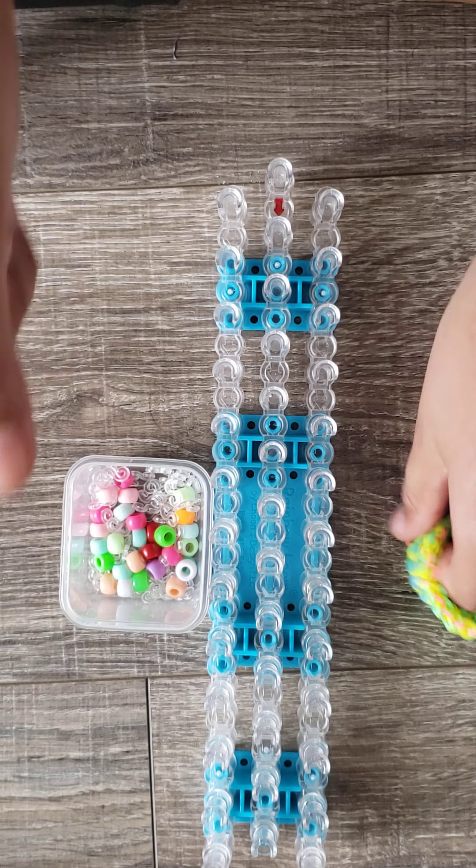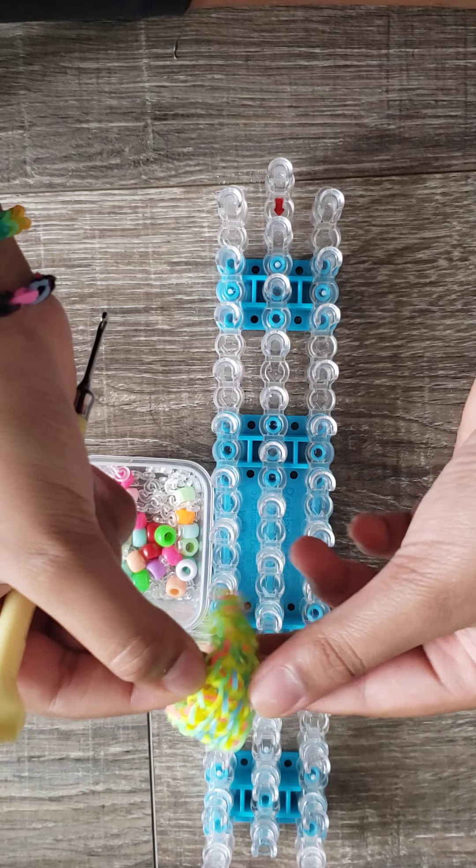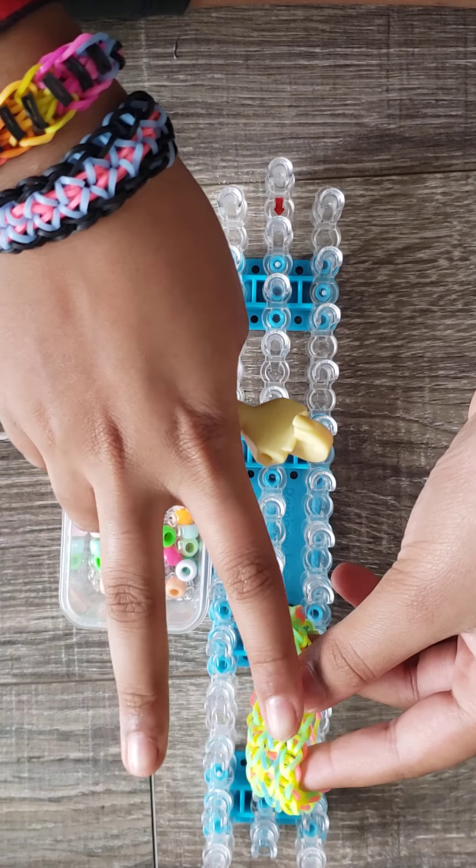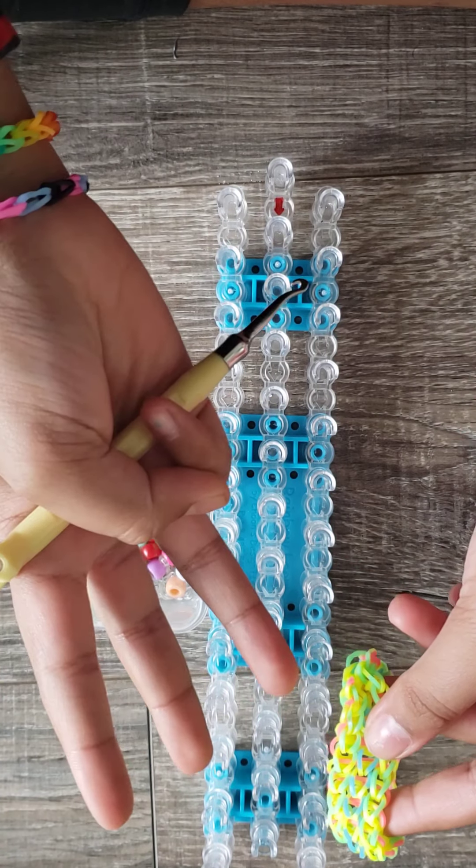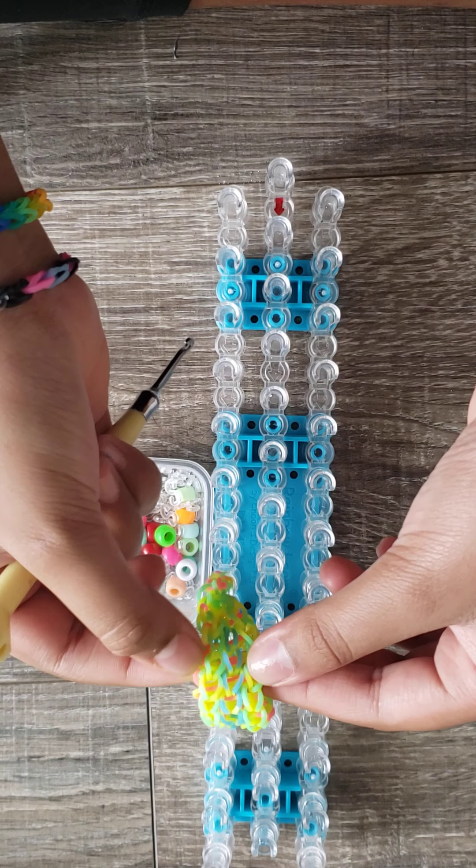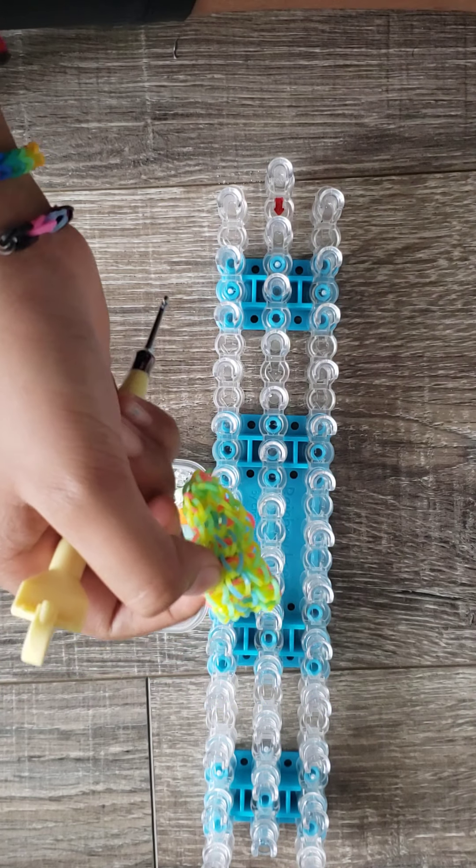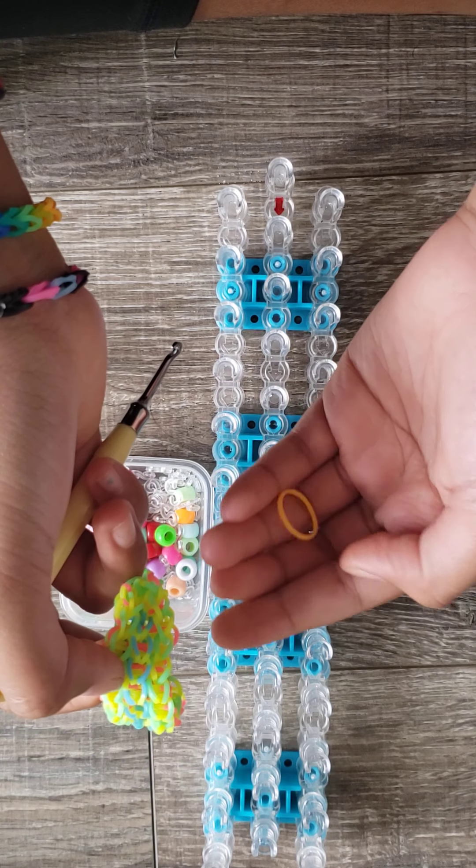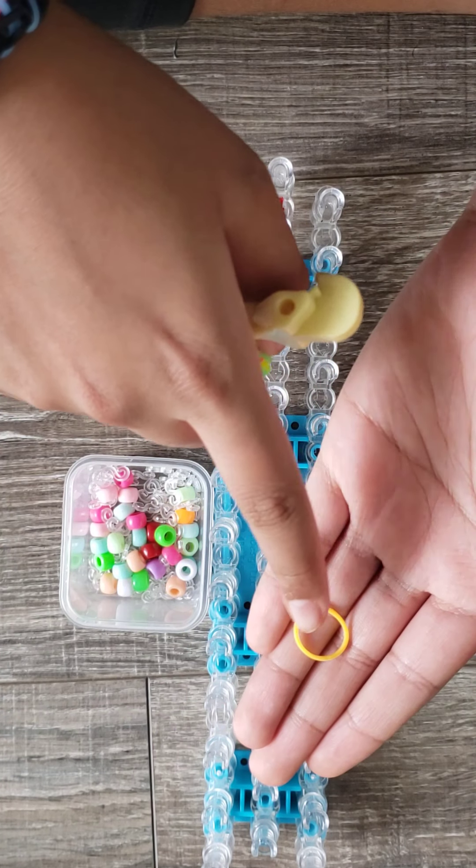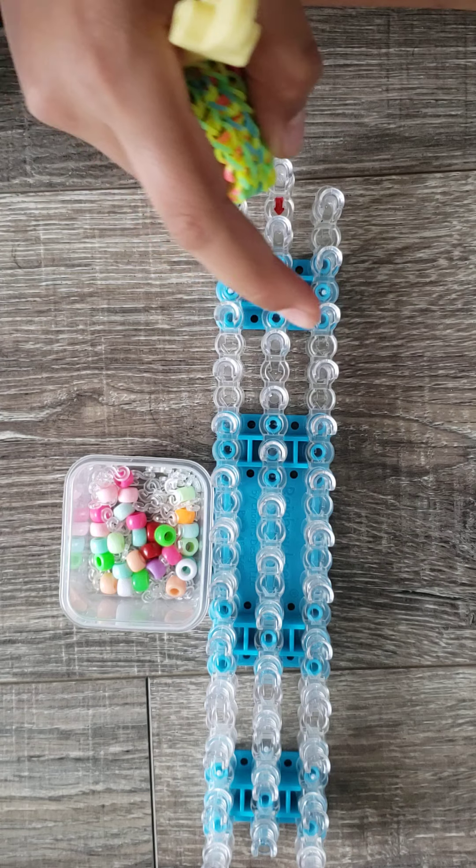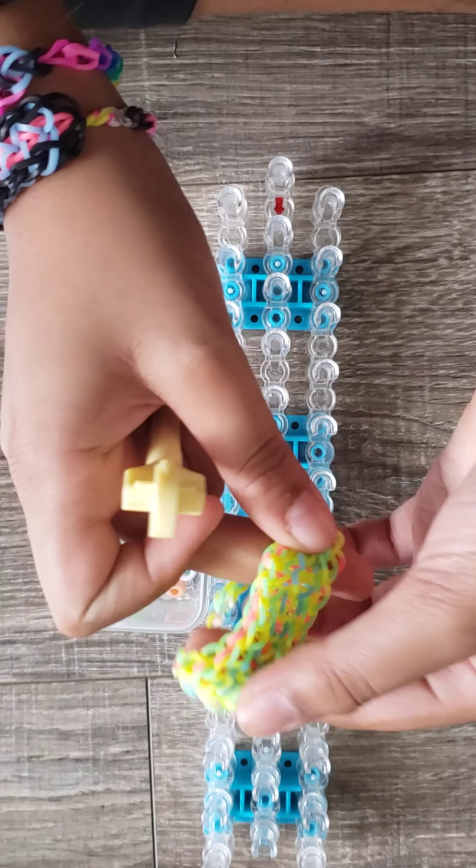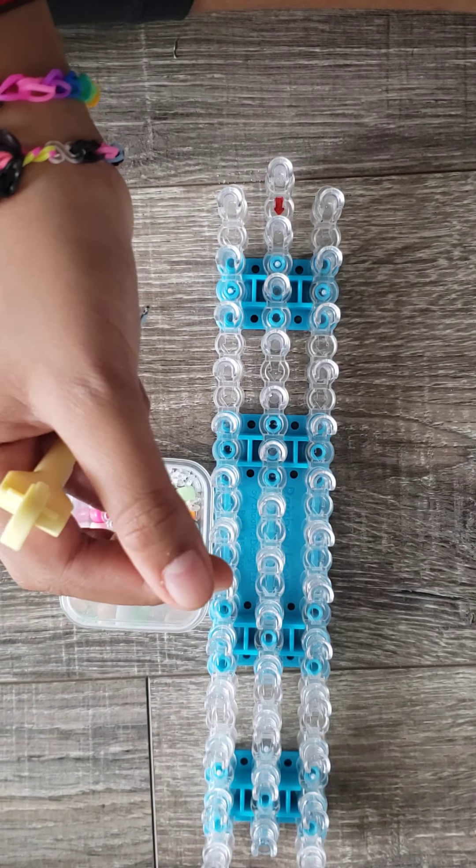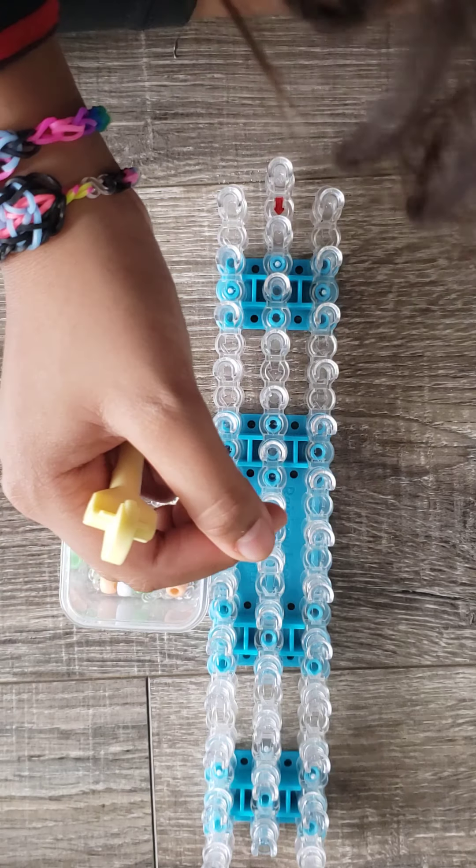So for the sides you'll be needing three colors. For these two I'll be using light or mustard. And for the middle part I'll be using orange, actually neon pink.